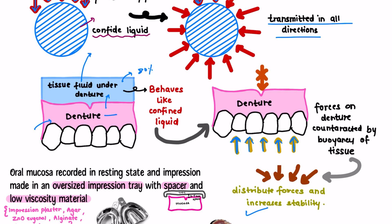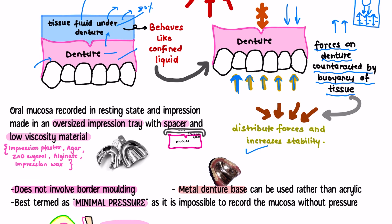The forces on the denture are counteracted by the buoyancy of the tissue. Buoyancy is the upward force exerted by the liquid on the object — here, the object is the denture and the liquid is the tissue fluid. When you apply forces from below and the tissue applies pressure from above, they counteract and nullify each other. Because of this, forces are distributed properly and stability is increased.